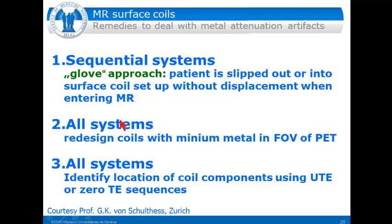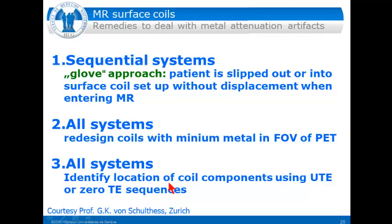Regarding surface coils — this is also a problem I'll discuss later. Sequential systems use a glove approach so the patient is slipped into or out of the surface coil setup without displacement when entering the MR. In all systems, vendors had to redesign the coils with a minimum of metal in the PET field of view to avoid attenuation artifacts from metal parts, and the coils must be kept small enough since there is also some attenuation from plastic. MR doesn't see the coils, so this must be accounted for in attenuation correction.